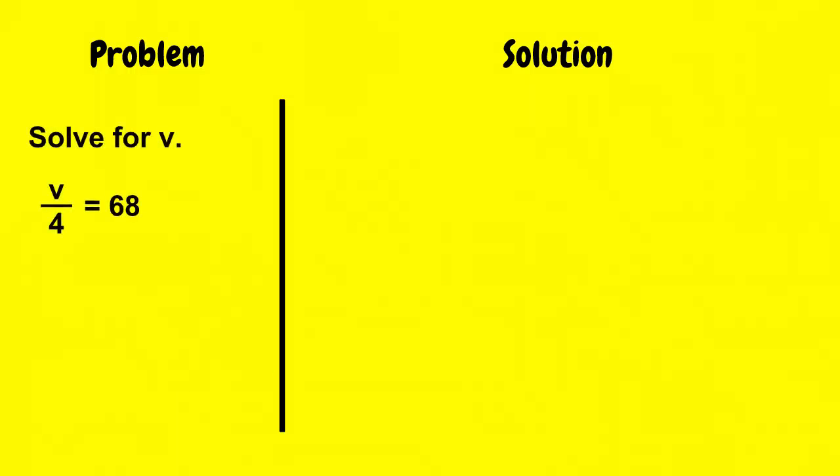And this problem here, we have to solve for v. So when I pay attention to this equation, it says v divided by 4 equals 68. So I look at the operation, what's happening to the variable, it's being divided by 4. The opposite of division,